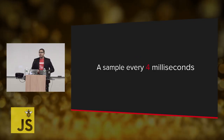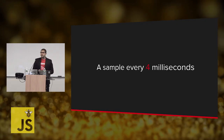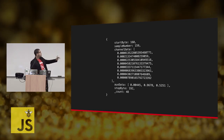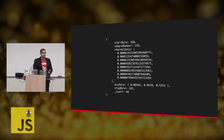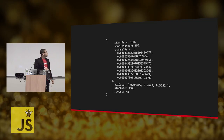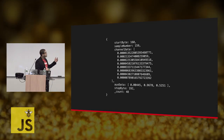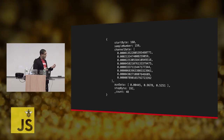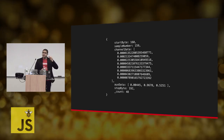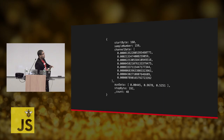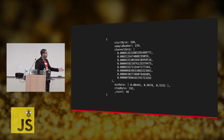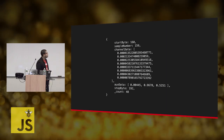We're going to be getting a data packet every four milliseconds, which is a pretty fast rate. It just looks like a normal JavaScript object — that's what you're going to be getting every four milliseconds. You're going to be getting some properties about the bytes, the sample number, and the channel data that corresponds to each one of the channels from the headset. You'll get a voltage value in that array, starting from channel one through channel eight.